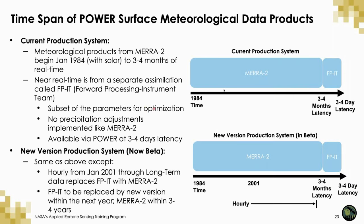In summary, the current production system features MERA-2 continued with FPIT. MERA-2 and FPIT run a very similar model — just with fewer observations for FPIT — and MERA-2 does feature a bias correction for precipitation that FPIT does not. The new version, currently in beta, will continue to use these but will also bring in MERA-2 hourly data and make it available through POWER with the hourly solar products from CERES, starting in the 2001 time period.